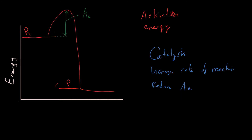That means we don't have to apply as much energy in order for the reactants to turn into products, which means we're going to have an energy level diagram that looks different. Drawing this in a different color, this is the amount of energy we need when a catalyst is present - our new activation energy, which we might call Ac, the activation energy with a catalyst. The curve doesn't need to go as high because the catalyst allows a smaller amount of energy for the reaction to happen.